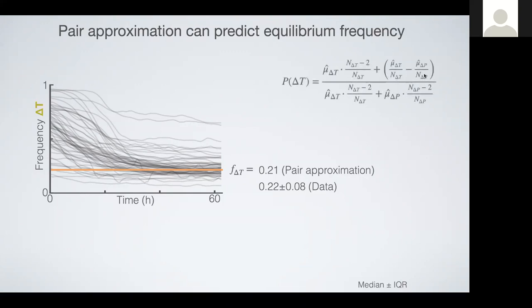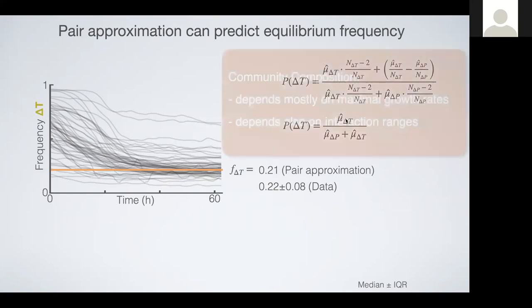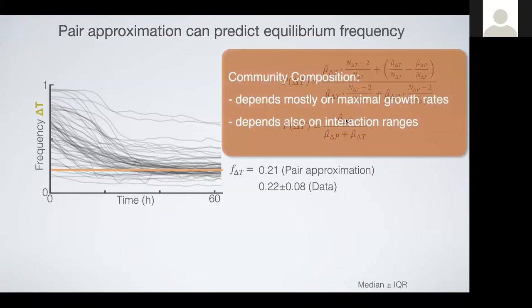We can calculate this quantity — the probability of having delta T — and in the limit of large interaction ranges, so large neighborhoods around the cells, it boils down to the well-mixed scenario where everyone interacts with everyone. What the limit equations tell us is that the type with the highest maximal growth rate, where the fitness function reaches the highest maximum, is the one that is more frequent. In general, this model suggests that the community composition depends mostly on the maximal growth rates, but also depends on the interaction ranges to a minor extent.